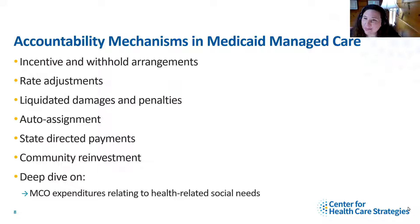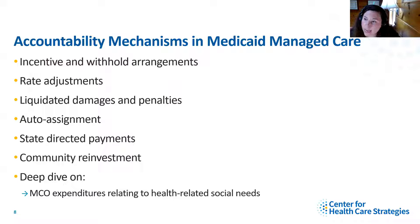Here's a taste of what you might see in one of those modules — the accountability mechanisms, often financially oriented in Medicaid managed care. We have a large table with different types of tools: incentive and withhold arrangements, rate adjustments, liquidated damages and penalties, and auto assignment. These can be powerful tools for states to define targets associated with primary care innovation and hold MCOs accountable. We also have a deep dive on classifying MCO expenditures relating to health-related social needs, having provided TA to 12 states in total over the past three years.